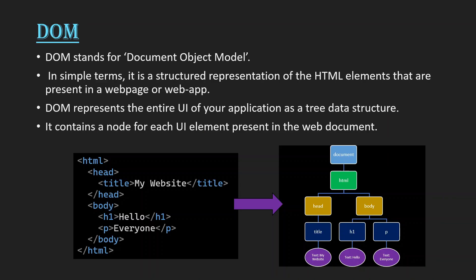So what is DOM? DOM stands for Document Object Model and in simple terms it is a structural representation of the HTML elements that are present in a web page or a web app. For example, in an HTML file we have lots of tags present like HTML, head, body, h1, and p — but our JavaScript can't understand the meaning of these tags.